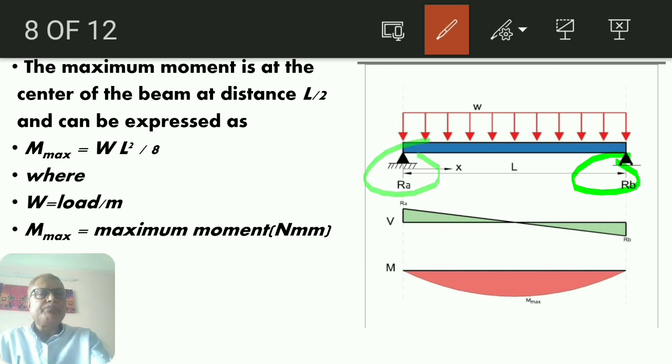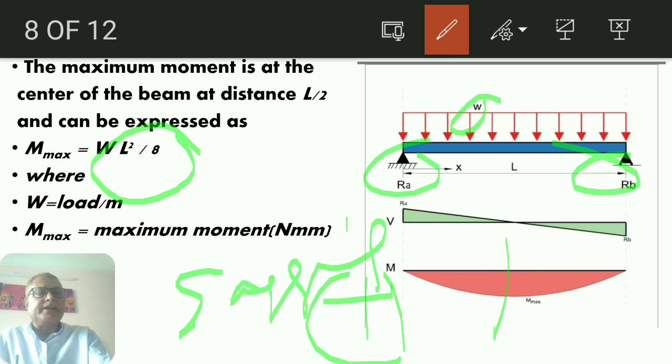For simply supported beam, the maximum bending moment is at the center of the beam, and what is the value? WL squared by 8. W is the load per meter, L is the distance between two supports, squared, divided by 8. You will get maximum bending moment at the mid of the span, and BM will be sagging bending moment.